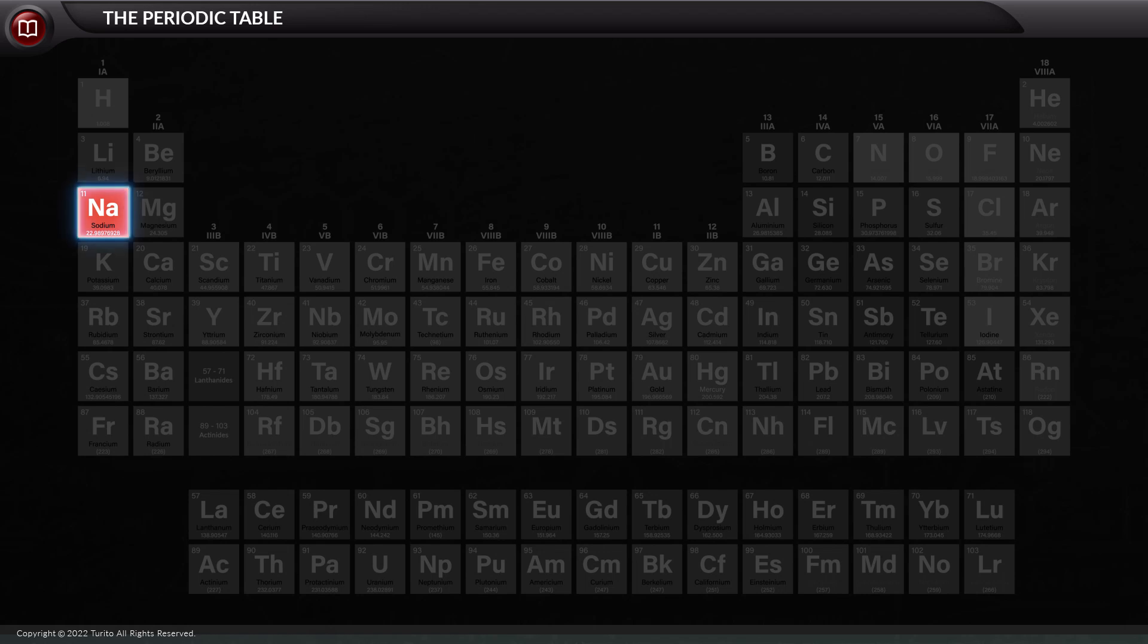The third row has sodium, followed by magnesium, aluminum, silicon, phosphorus, sulfur, chlorine, and argon.